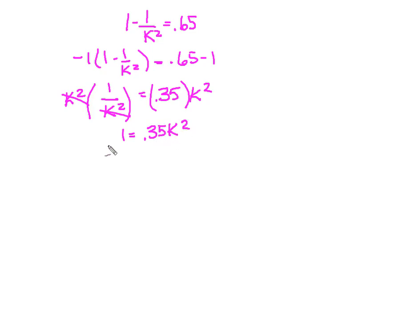Remember, I'm after k. So I'm going to take the square root of both sides. And I know that the square root of one is one. So that's going to give me one equal to the square root of 0.35 is, I'm going to take it four decimal places, is 0.5916 k.